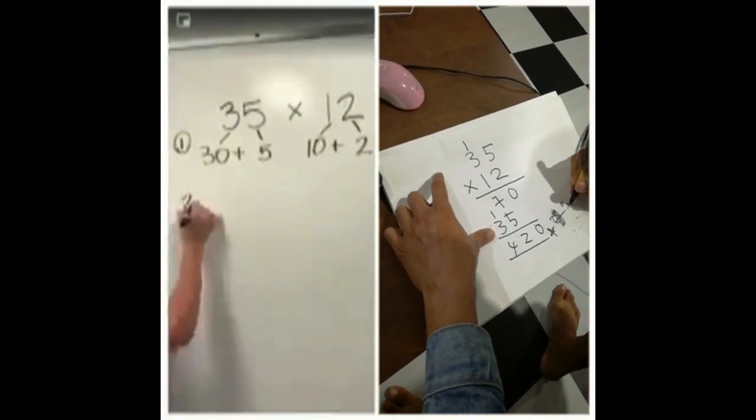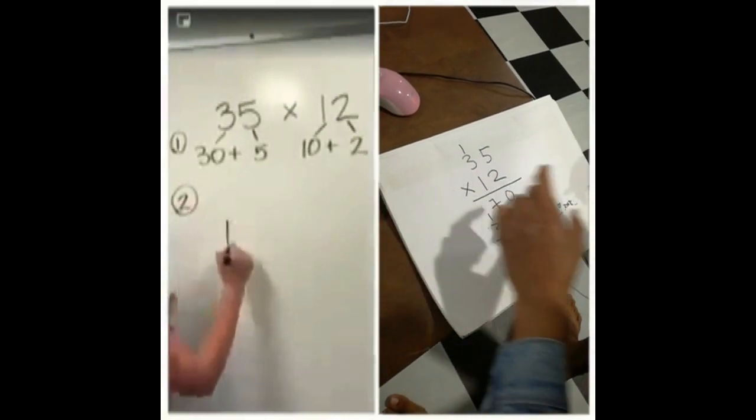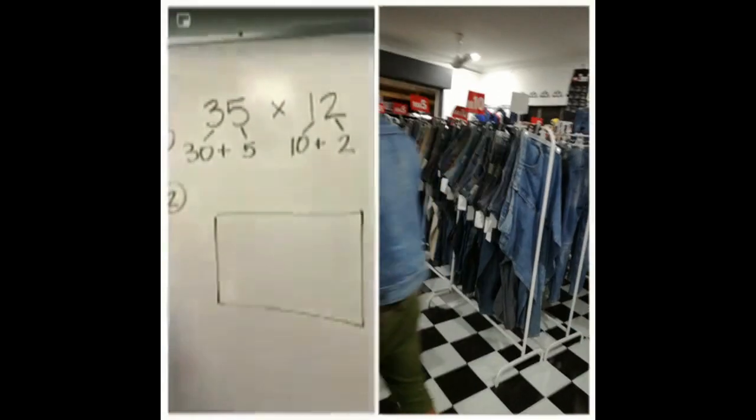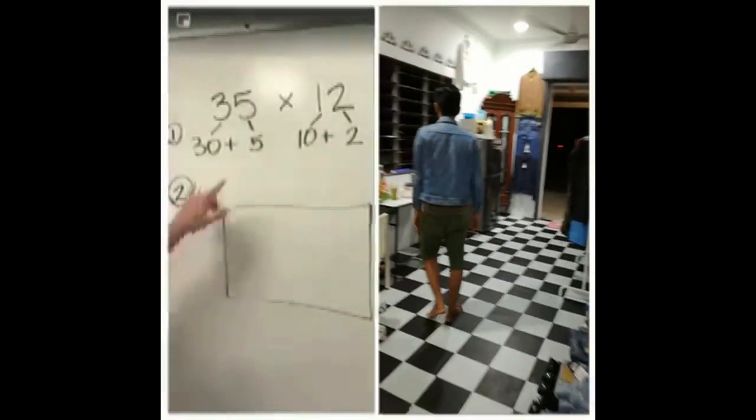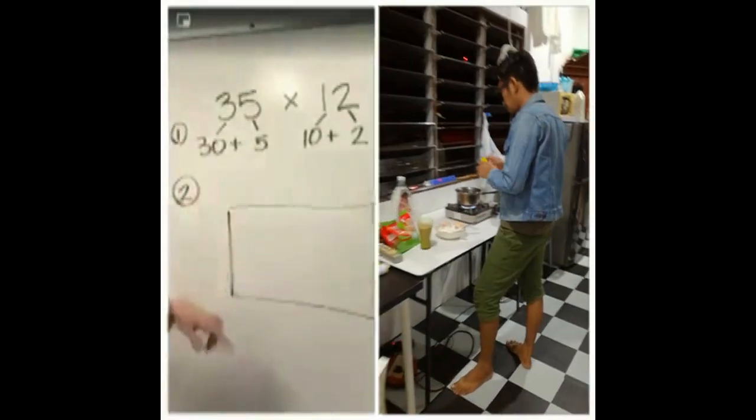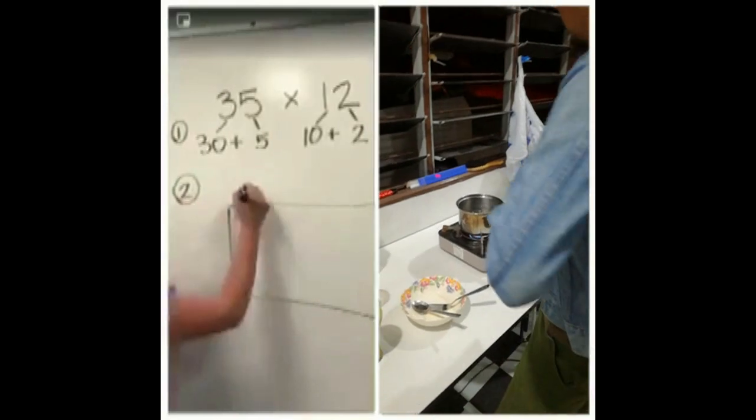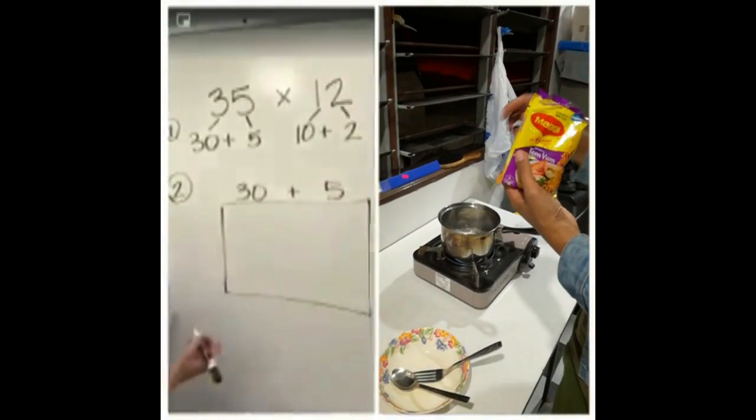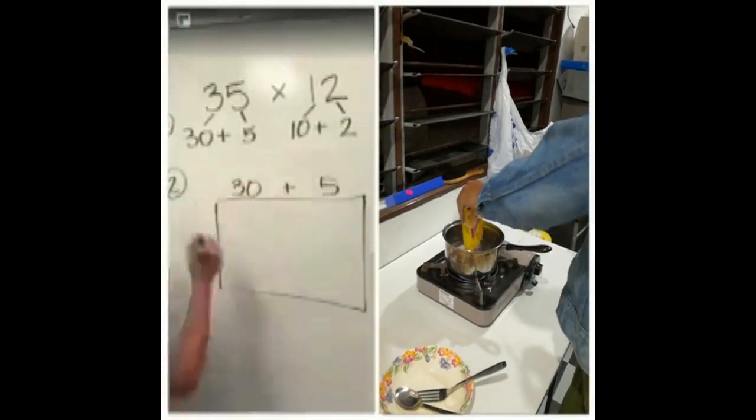The next step would be to draw a large box. And on this box, we're going to put both of our expanded numbers, so on the top I'm going to put 30 plus 5, and on the side I'm going to put 10 plus 2.